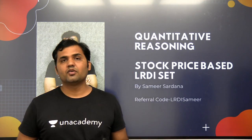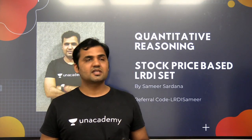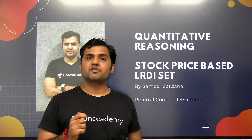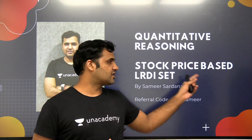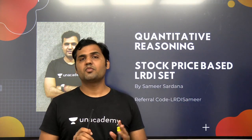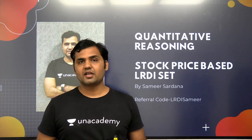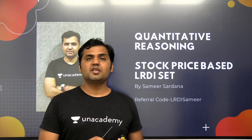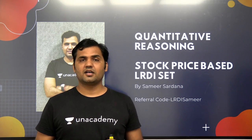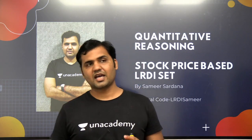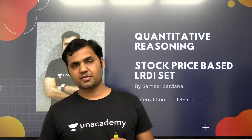In this video, we are going to discuss a quantitative reasoning, stock price fluctuation based set — a very important one, a difficult one. It came in the CAT exam in the previous year. I have taken this set from the previous year CAT paper.